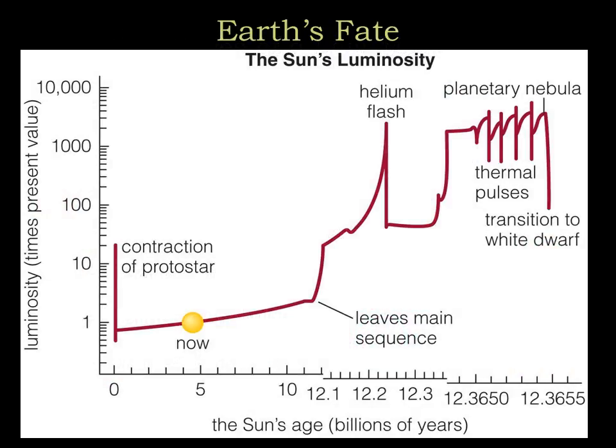The sun's demise will affect Earth even before it enters the final stages of its life. The sun will continue to gradually brighten, and as it does, Earth will get hotter. Some climate models predict that the oceans will begin to evaporate about a billion years from now, while other models suggest that we may have more time. All models agree that by about three to four billion years from now, the sun will have brightened enough to doom Earth to a runaway greenhouse effect.